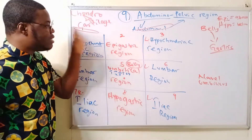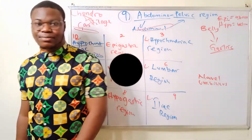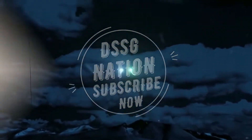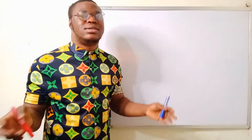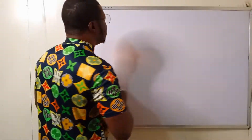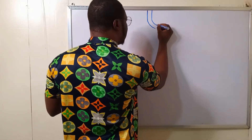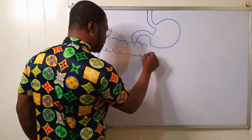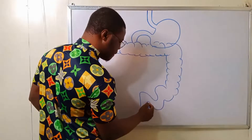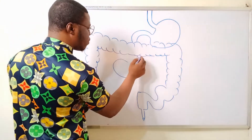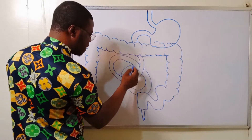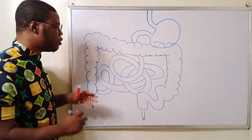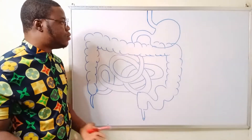Now let's talk about the organs found in the different abdominal regions. We'll start with the GIT — the gastrointestinal tract — and divide it across the nine regions.